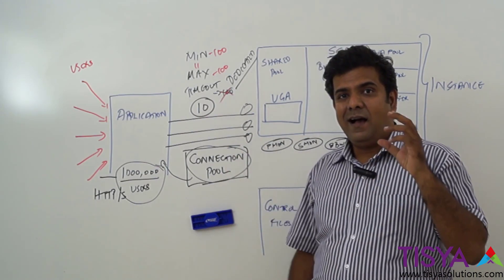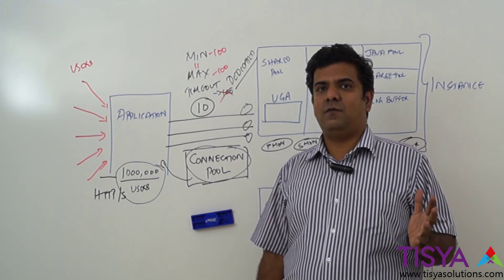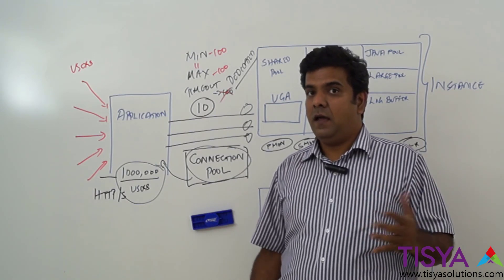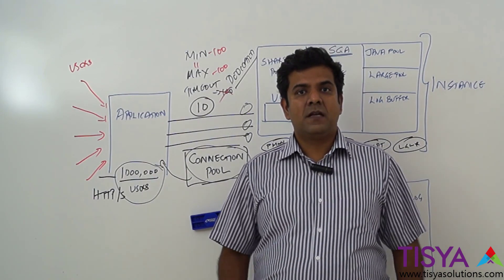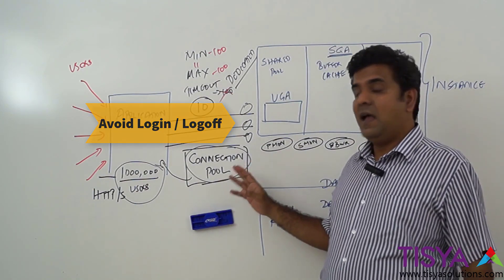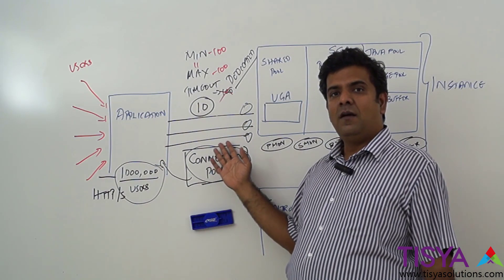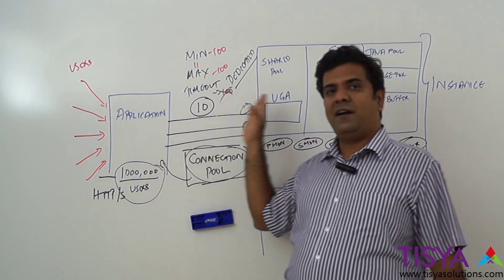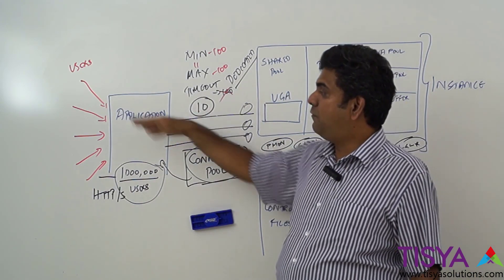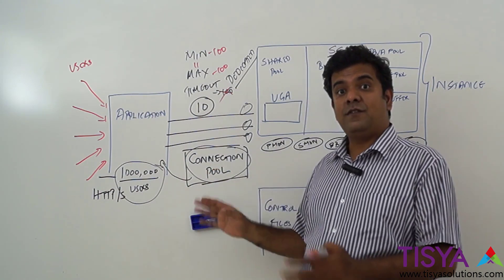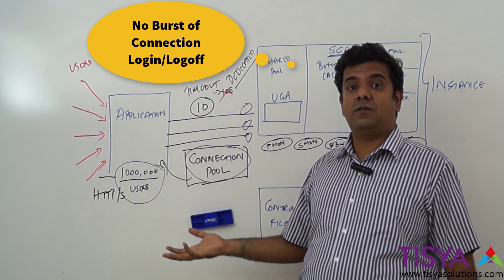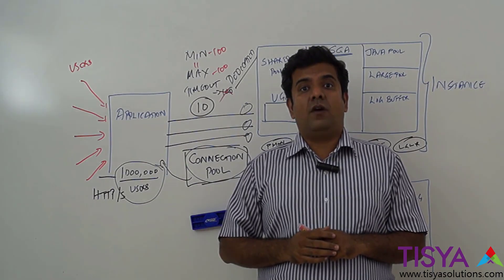I will give a demo showing how the same set of SQL executions performs differently when using a persistent connection versus creating and logging out after each SQL — you will clearly see the difference. To summarize: from a database optimization perspective, avoid login and logoff. If using an application, use a connection pool — users log into the application, not the database. The application maintains a fixed number of reusable connections for all users, avoiding sudden bursts of connection requests or logouts.